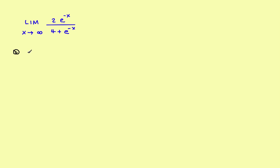So what you would have is this. The derivative of the numerator — you've got 2e to the negative x. The derivative of this: you've got the constant 2, and remember, when you have an exponential function, it's the original function times the derivative of its exponent. So this gives you negative 2e to the negative x — there's the derivative of the numerator.